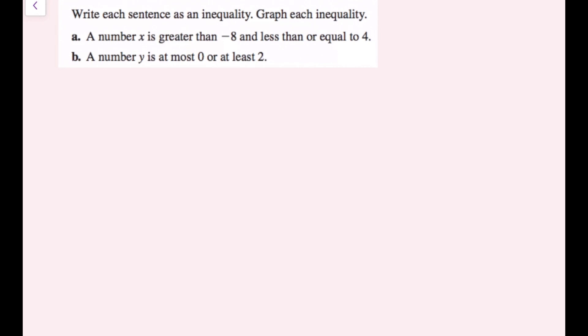Write a sentence as an inequality and graph each inequality. For part A: a number X is greater than negative 8 and less than or equal to 4. So I know X > -8, and X ≤ 4. This is my AND statement.